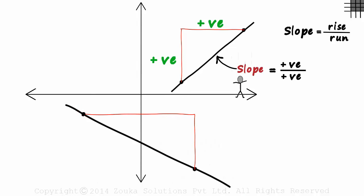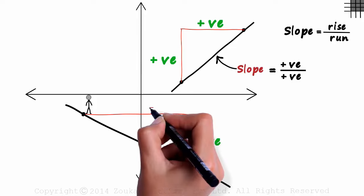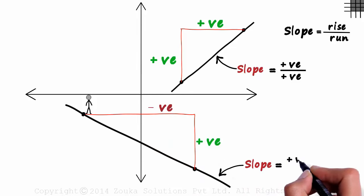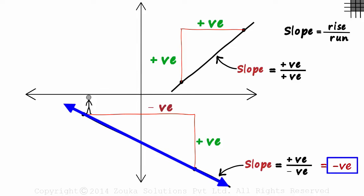If we look at the little man, he rises up and runs to the left. Rising up is positive and running to the left is negative. So the slope of this line will be positive over negative. And this ratio will be negative. This line has a negative slope.